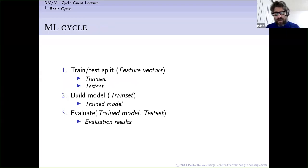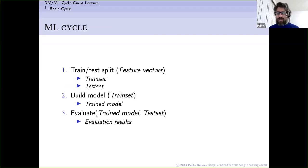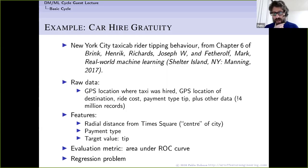The basic machine learning cycle: you take feature vectors, split them into a train set and a test set, build a model using the train set, and evaluate that trained model on the test set to get evaluation results. These three steps you can even call the Kaggle model — it's the same way you participate in online competitions.